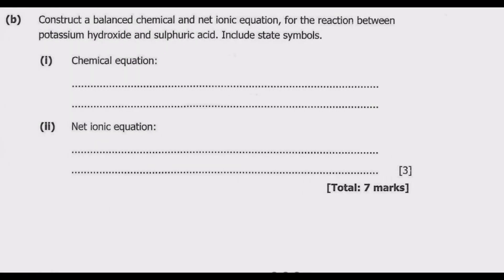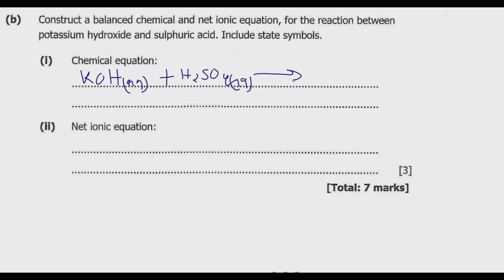Question B: construct a balanced chemical equation and net ionic equation for the reaction between potassium hydroxide and sulfuric acid, including state symbols. KOH (aq) reacts with H₂SO₄ (aq) to produce a salt and water. The salt will be potassium sulfate K₂SO₄ (aq), plus water (l). Now we balance the equation.